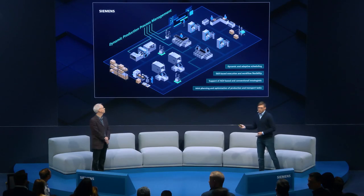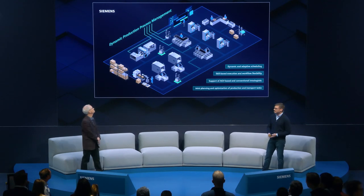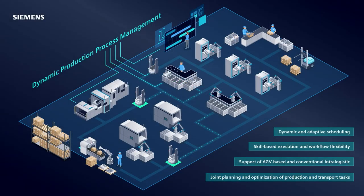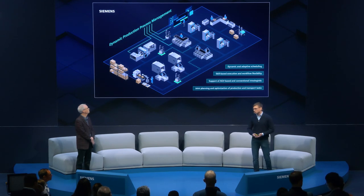Let's now have a closer look at the system itself and its features. In this picture we try to visualize how we envision a flexible production setup. We have AGV-based intra-plant logistics, alternative machines, redundant machines for load balancing, manual workstations, and robotic assembly stations. Of course, in a flexible production scenario, not everything goes according to plan. That's why we have a dynamic and adaptive schedule on board.